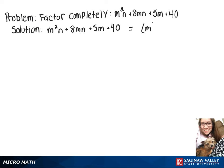So we'll have m squared n plus 8mn plus our other group, which is 5m plus 40.